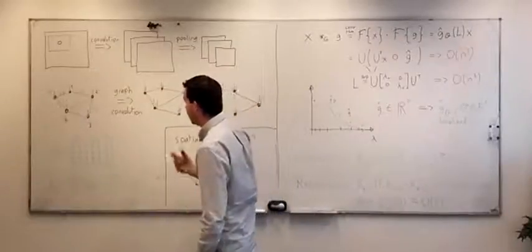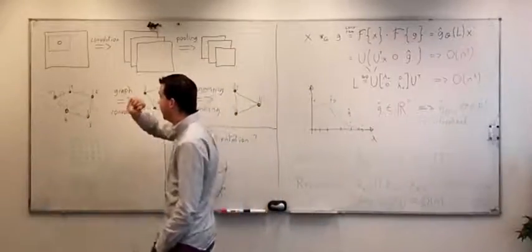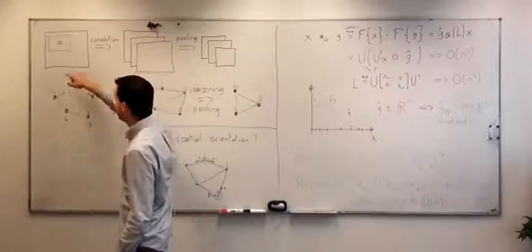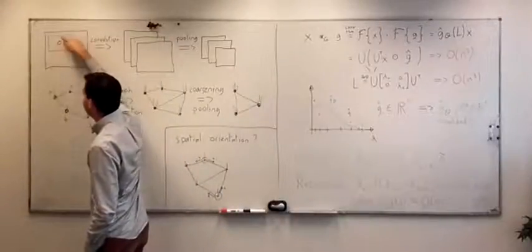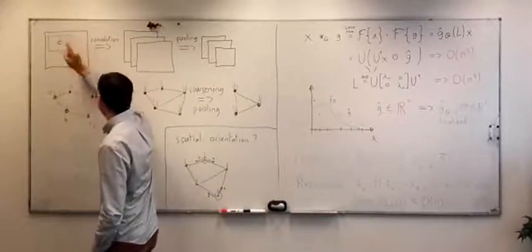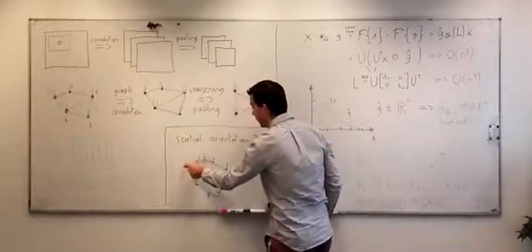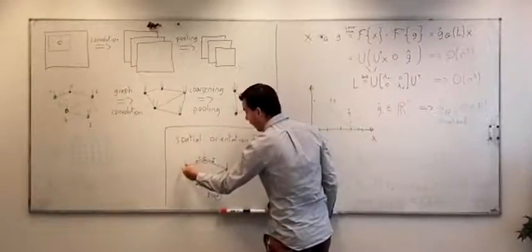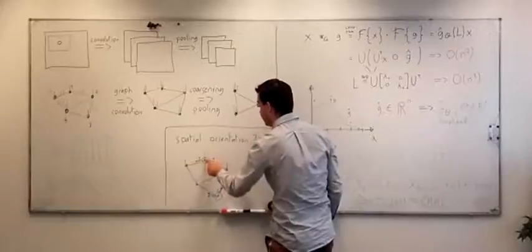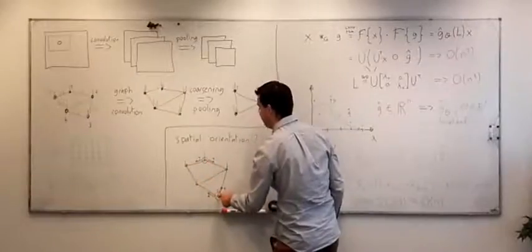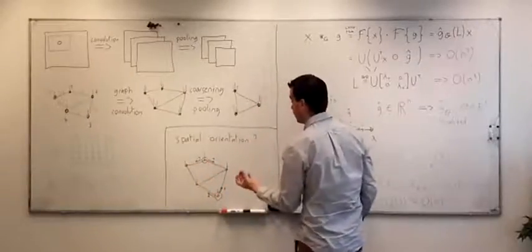The second problem is how to define graph convolution. Again, in contrast to images, where each pixel has a role with respect to the central one — such as above or to the right — on graphs we don't know in general the role of one vertex relative to another, or whether two vertices share the same role. Here, we don't have any orientation information.